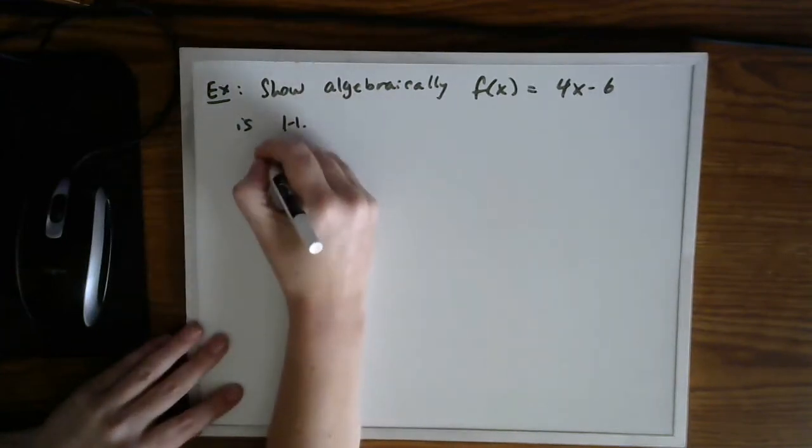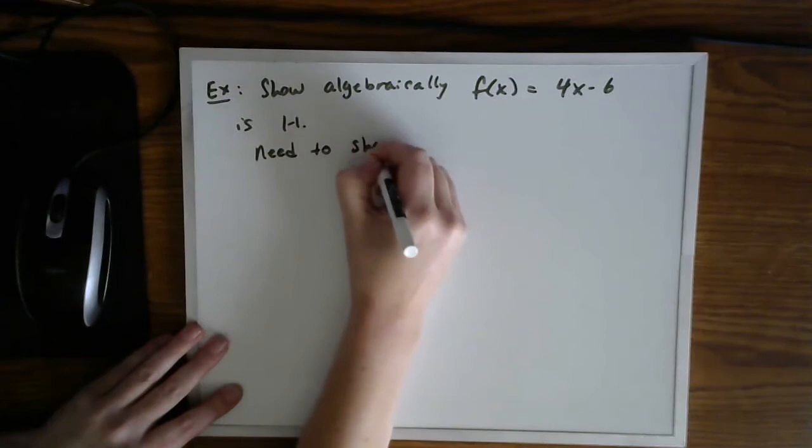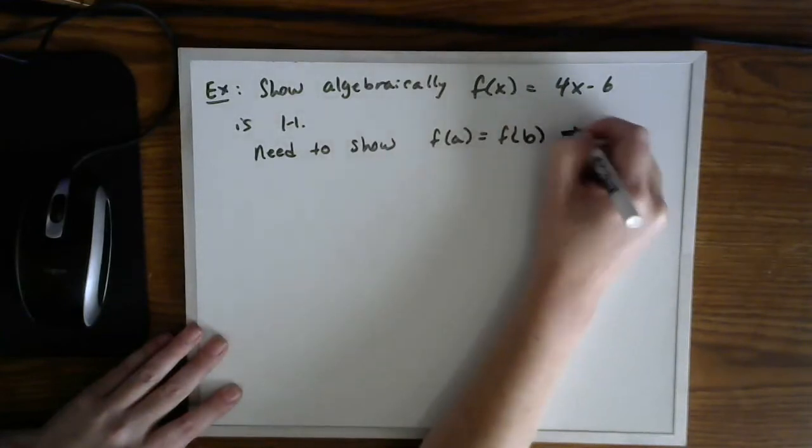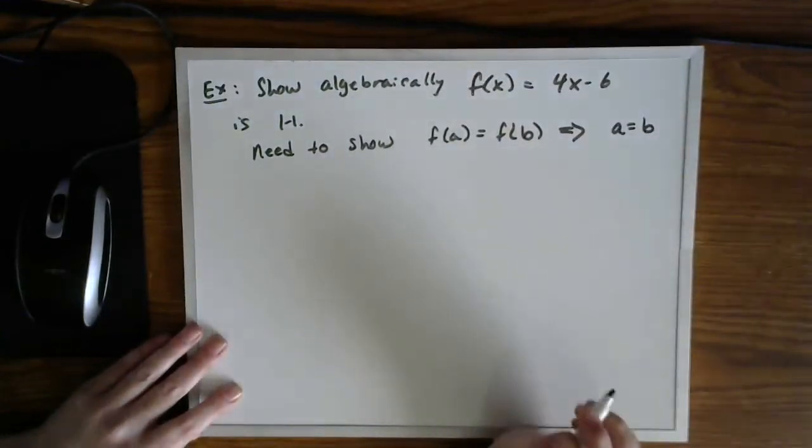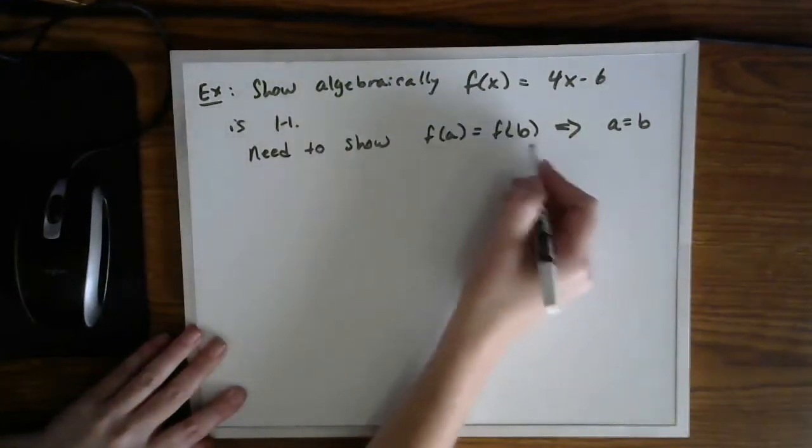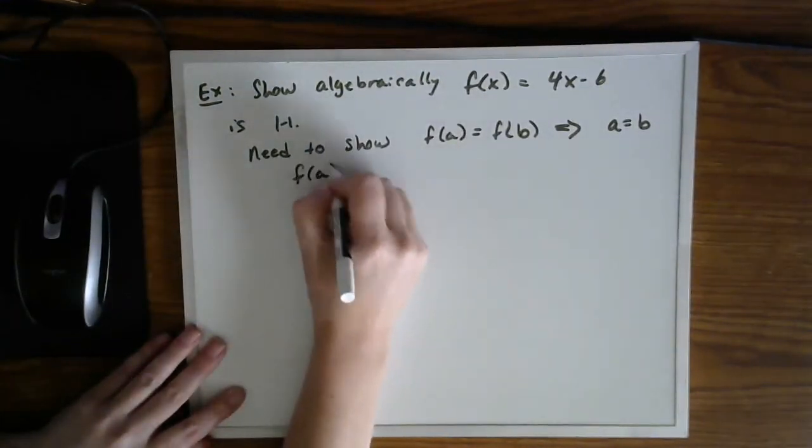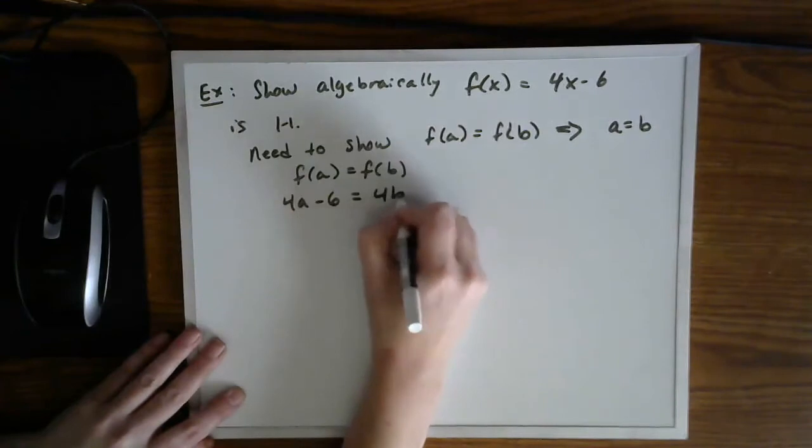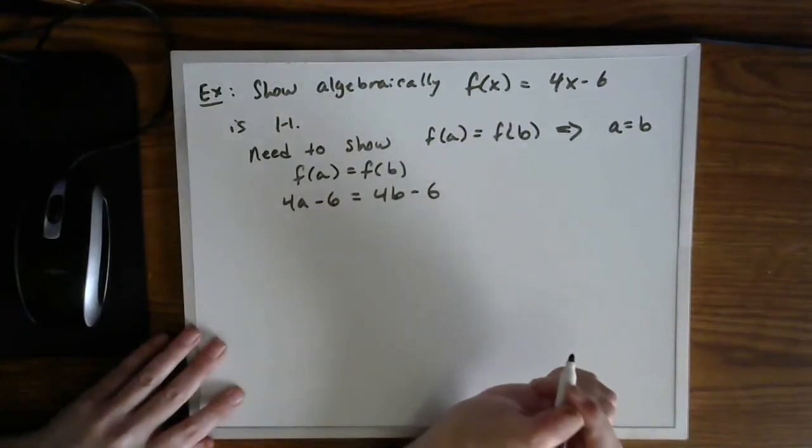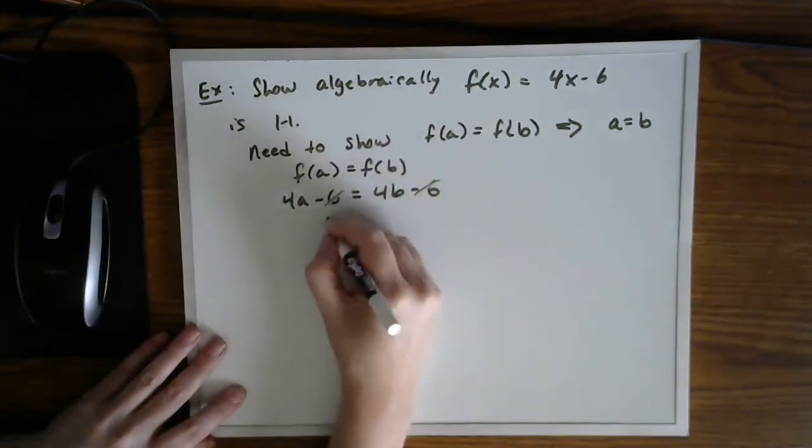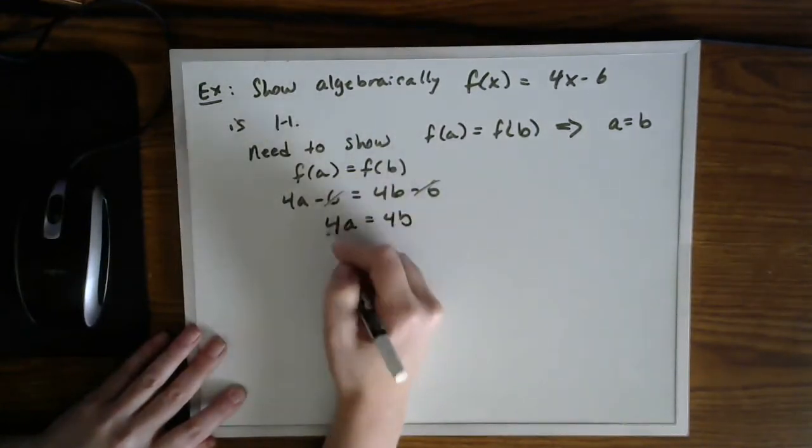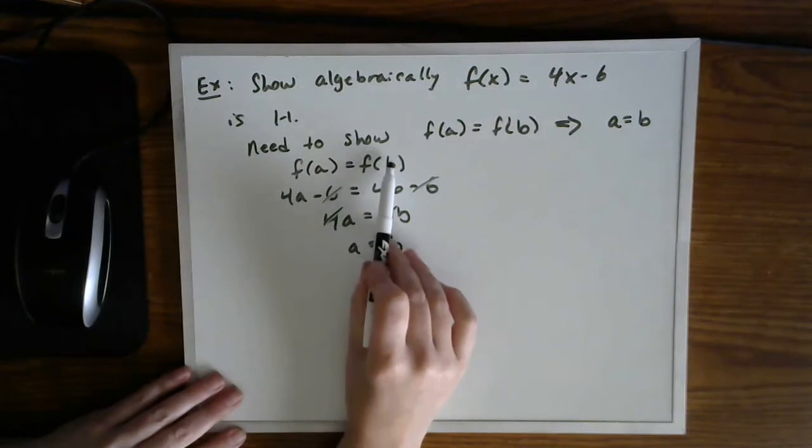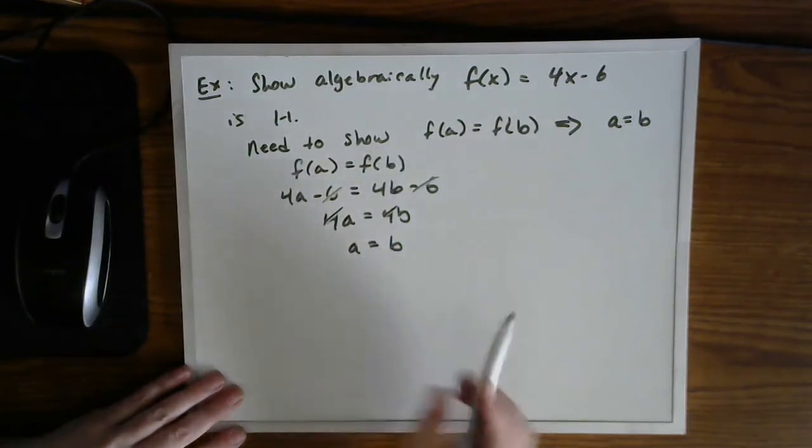So what I mean is let's use the definition. So we need to show that f of a equals f of b implies that a equals b. So let's go ahead and just start with our assumption f of a equals f of b. So 4a minus 6 equals 4b minus 6. Then what we'll notice is we can start to clean this up. The sixes will cancel, as do the fours. So sure enough, when we started with f of a equaling f of b, that implied a equals b.